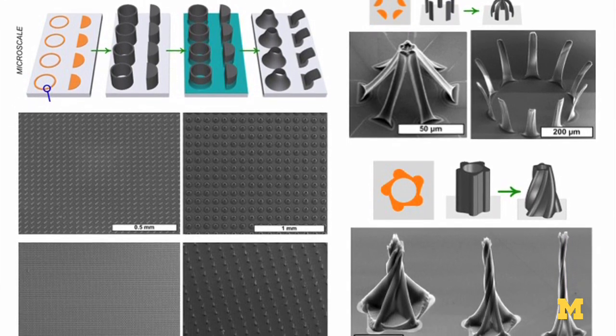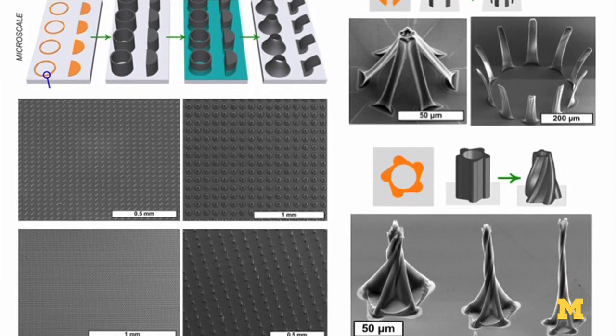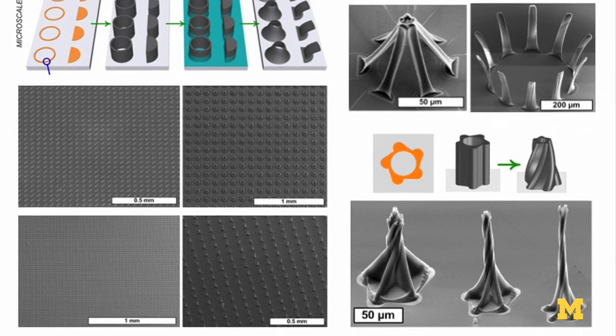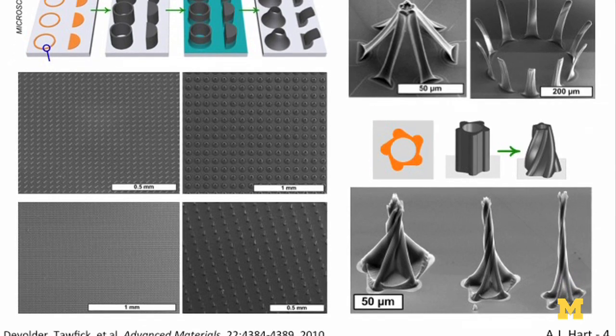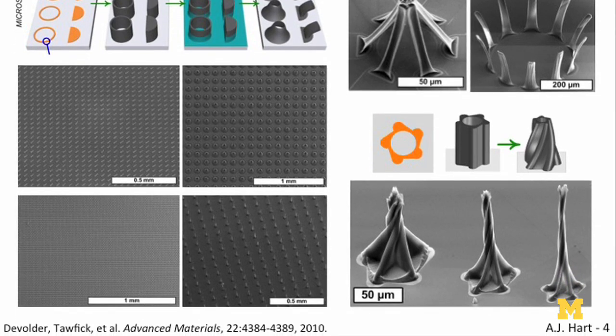So using carbon nanotubes and building them into complex three-dimensional structures — these are some models of 3D structures of nanotubes that we are manufacturing in the lab today.